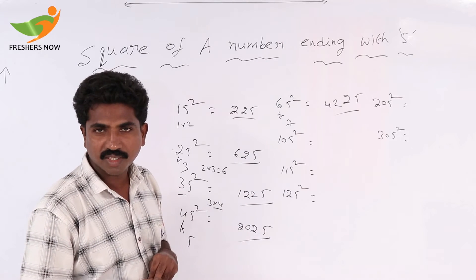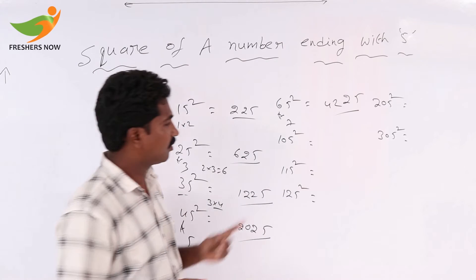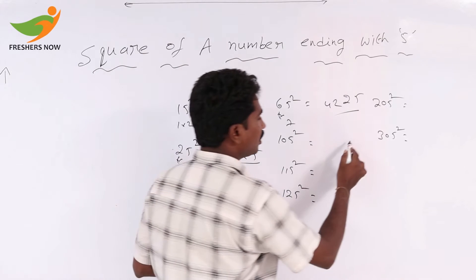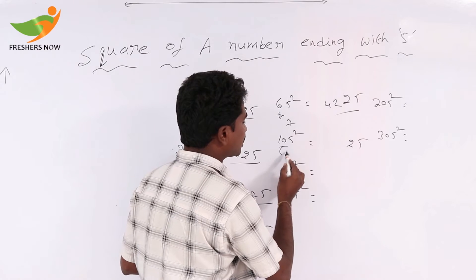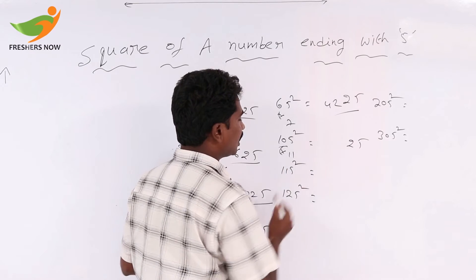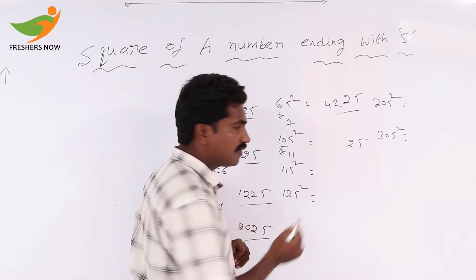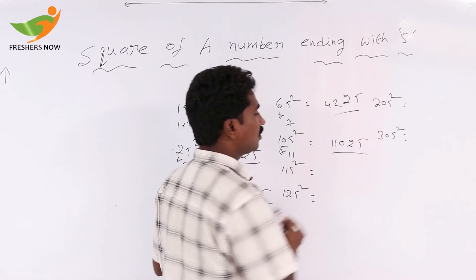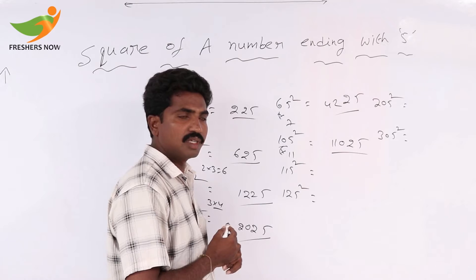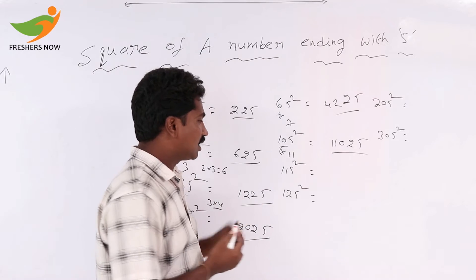For 105 square: 5 square equals 25. The remaining part is 10. The next number after 10 is 11, so 10 into 11 equals 110. So 105 squared equals 11025.